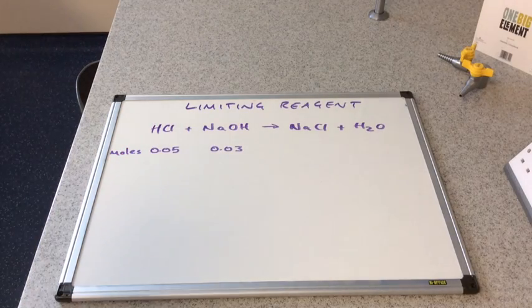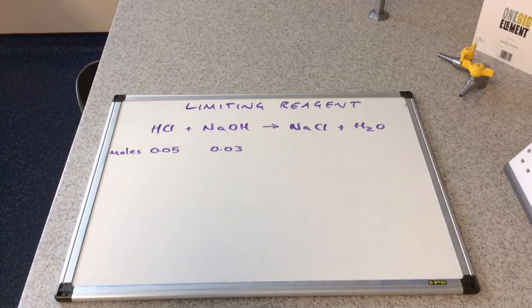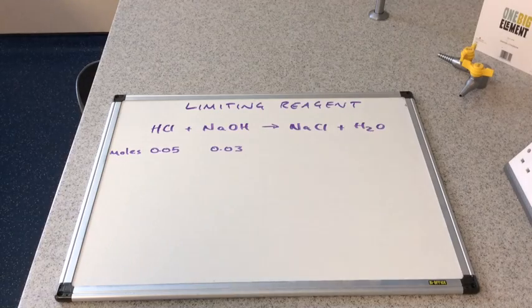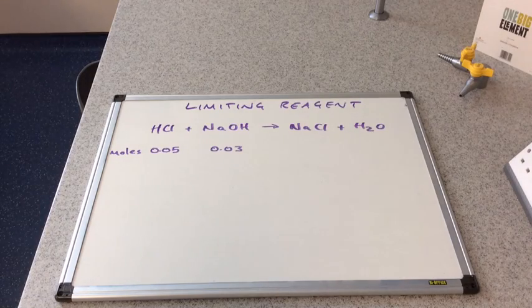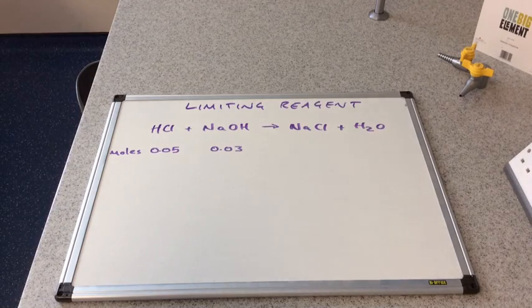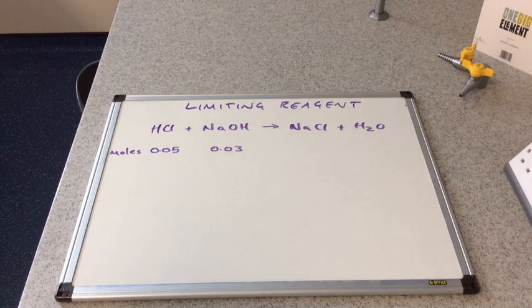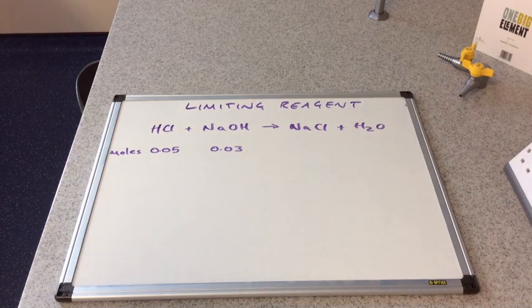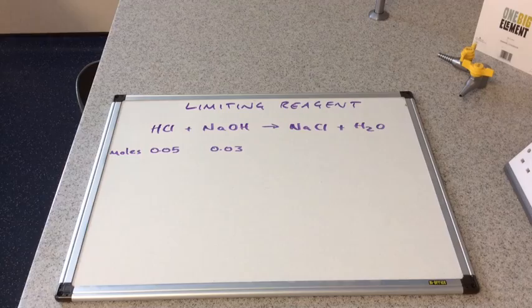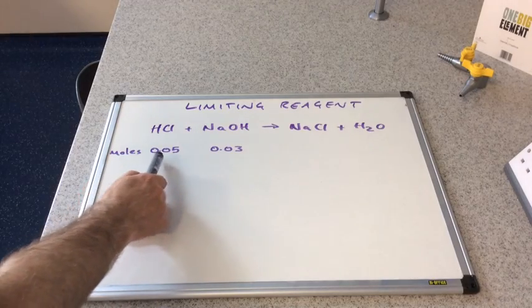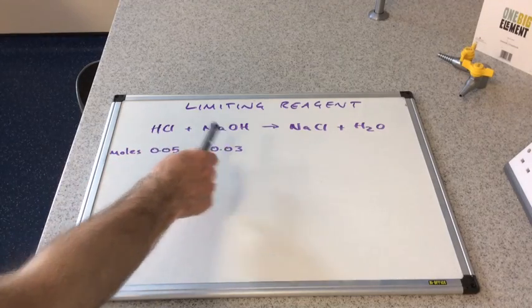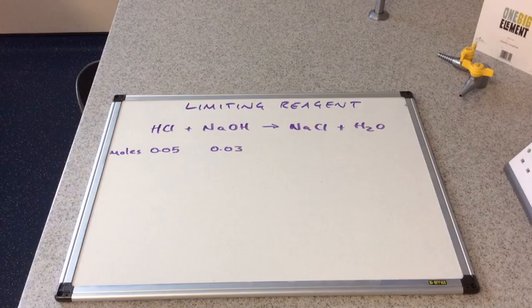For the next part of the video, I'm going to look at a concept called the limiting reagent. I've written up a classic neutralisation reaction on the board: the reaction between HCl, hydrochloric acid, and sodium hydroxide. I've also written down how many moles of each chemical were used at the start of the reaction.